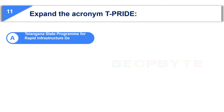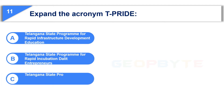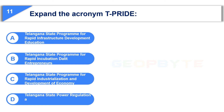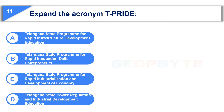The eleventh question is: Expand the acronym T-Pride. Option A: Telangana State Program for Rapid Infrastructure Development Education. Option B: Telangana State Program for Rapid Incubation Dalit Entrepreneurs. Option C: Telangana State Program for Rapid Industrialization and Development of Economy. Option D: Telangana State Power Regulation and Industrial Development Education. The correct answer is Option B: Telangana State Program for Rapid Incubation Dalit Entrepreneurs.